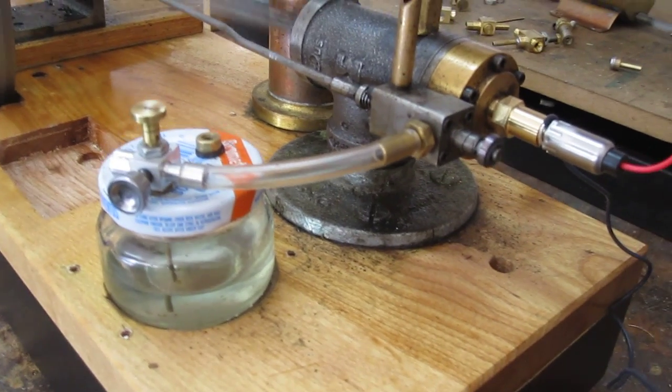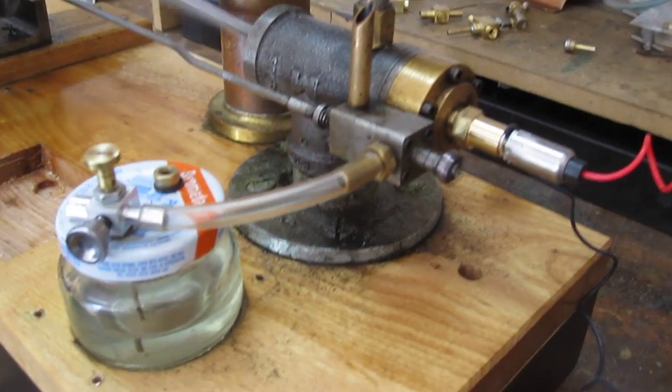I think this shows pretty well that the carburetor can be mounted on the fuel tank and doesn't need to be mounted right on the engine.